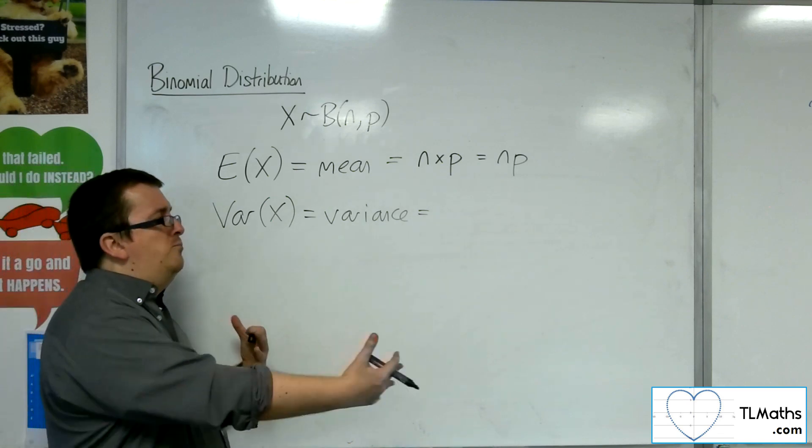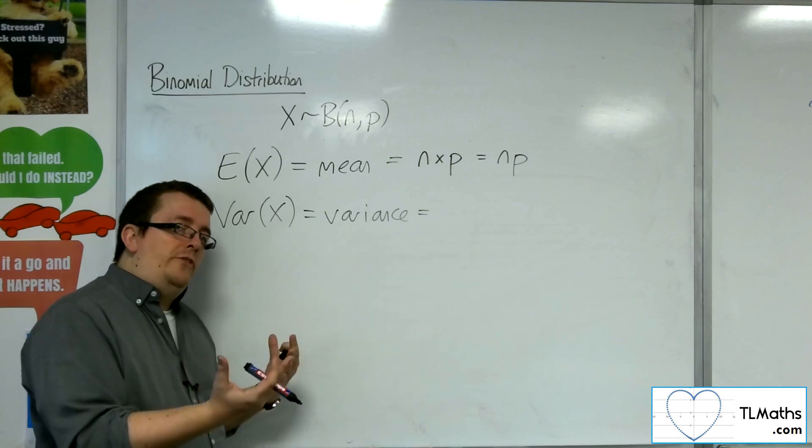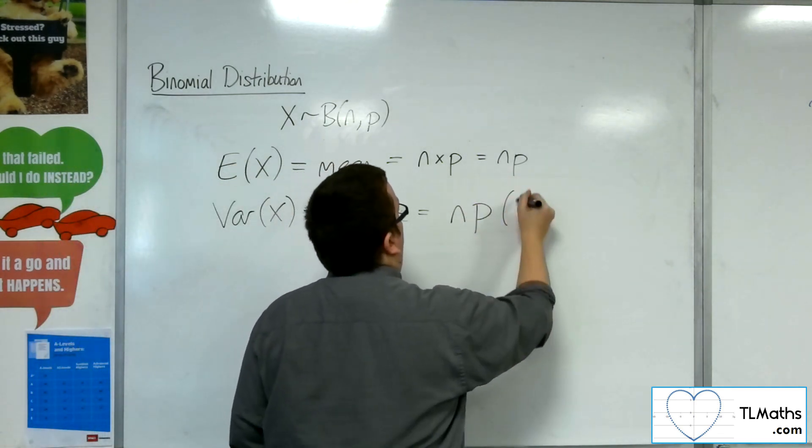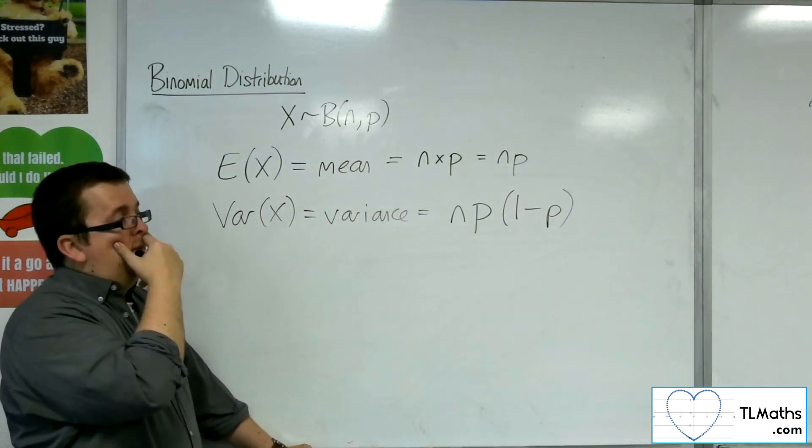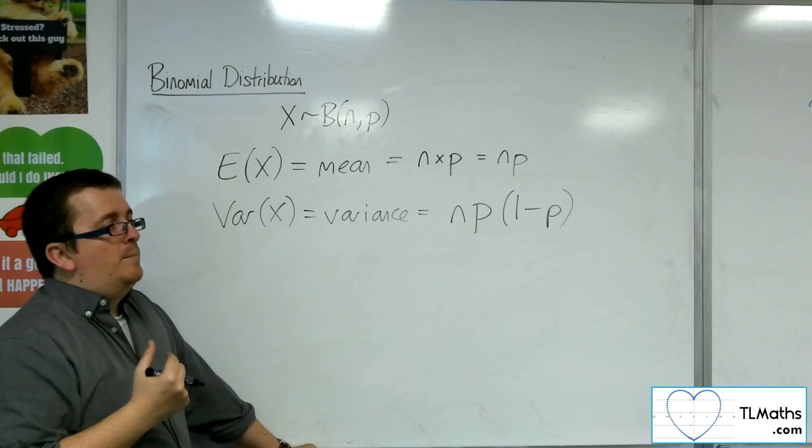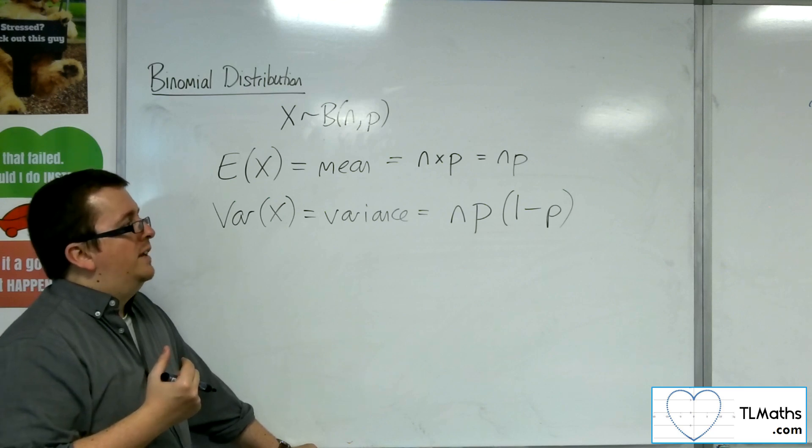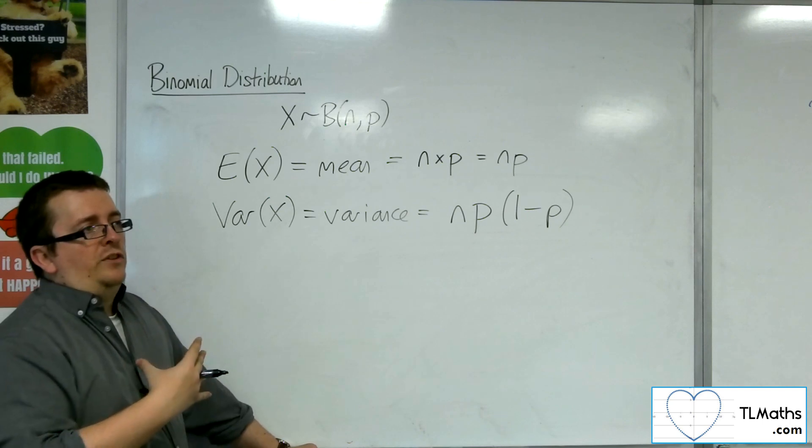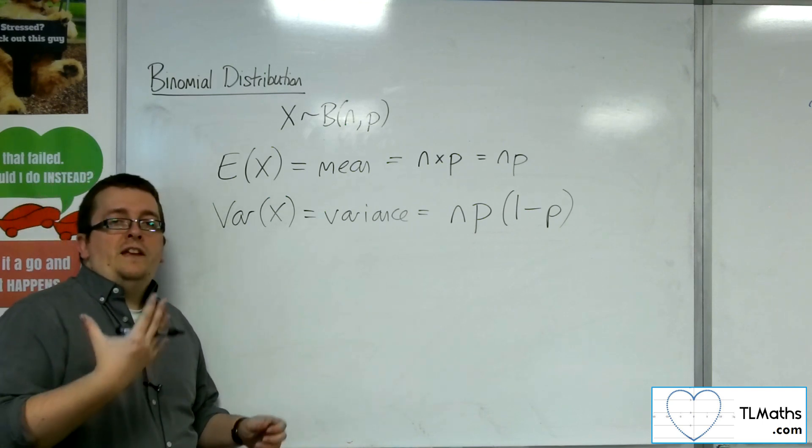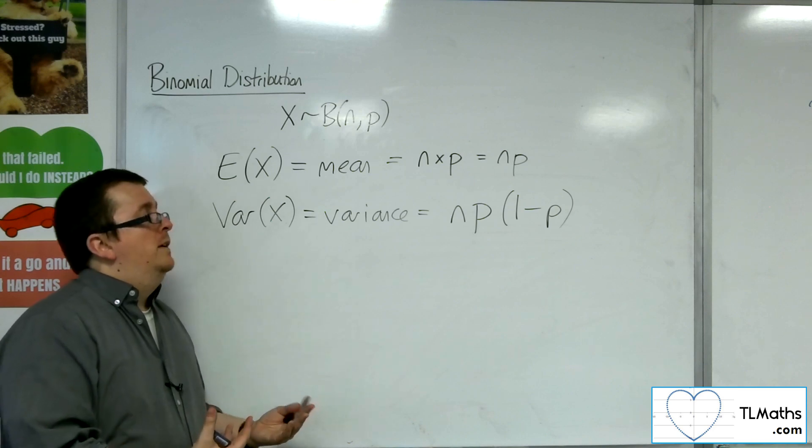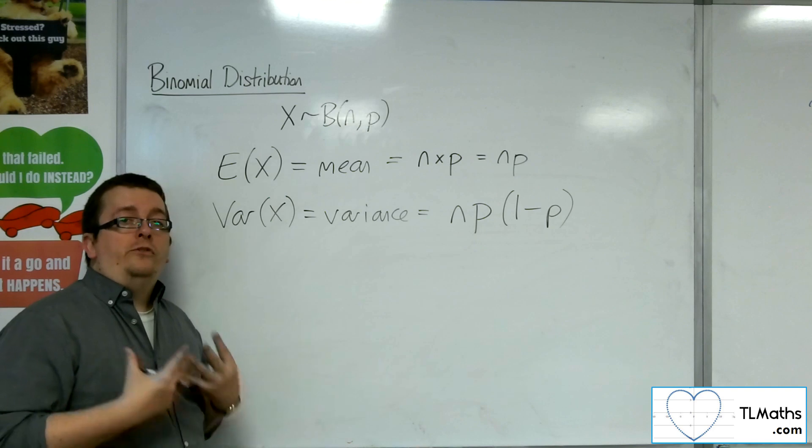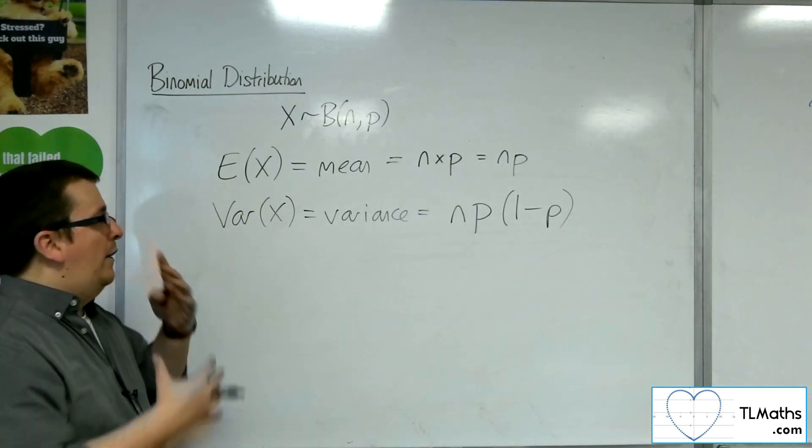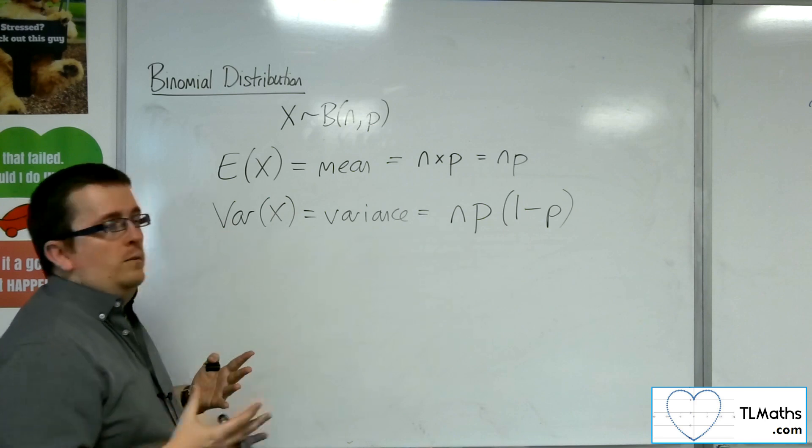The variance, how spread out the distribution is, is a little bit more difficult to explain. The formula for the variance is n times p times 1 minus p. Now, if you're thinking about where that's really going to come from, I would start to think back to a few videos ago where we were looking at tabulating probabilities and then drawing the stick graph that would go with the distribution. Thinking about how spread out those distributions were and how the n, the p, will affect this formula, and how more spread out it would be for certain probabilities.